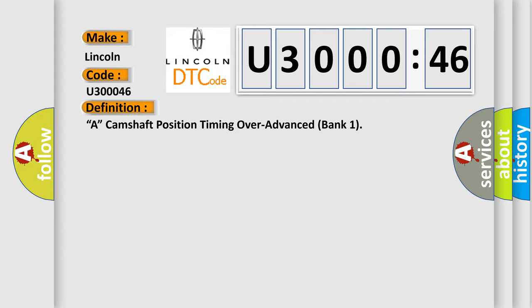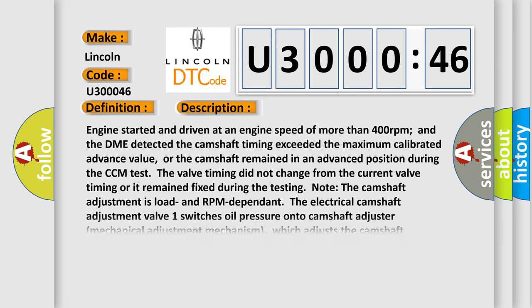The basic definition is: camshaft position timing over-advanced, bank one. The engine was started and driven at more than 400 RPM, and the DME detected the camshaft timing exceeded the maximum calibrated advance value, or the camshaft remained in an advanced position during the CCM test. The valve timing did not change from the current valve timing or remained fixed during testing. The camshaft adjustment is load and RPM dependent. The electrical camshaft adjustment valve switches oil pressure onto the camshaft adjuster mechanical adjustment mechanism, which adjusts the camshaft.